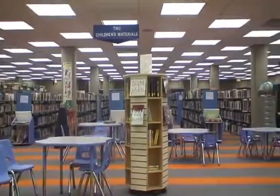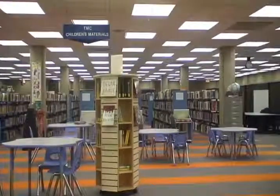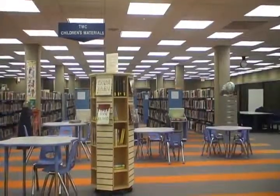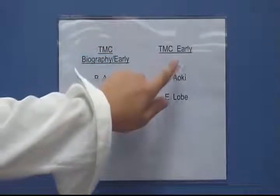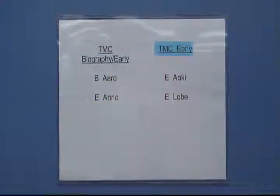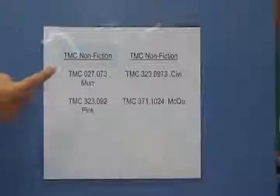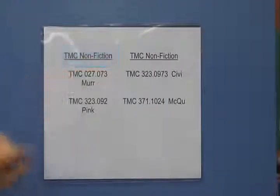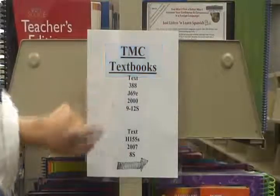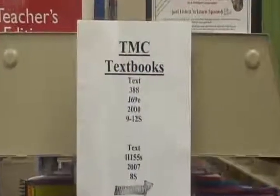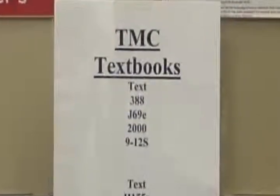DDC is used exclusively for our chosen materials collection. Within chosen materials are many sections. This includes biographies, early readers, fiction, nonfiction, and textbooks. Nonfiction and textbooks are arranged using DDC. All other books are arranged alphabetically.